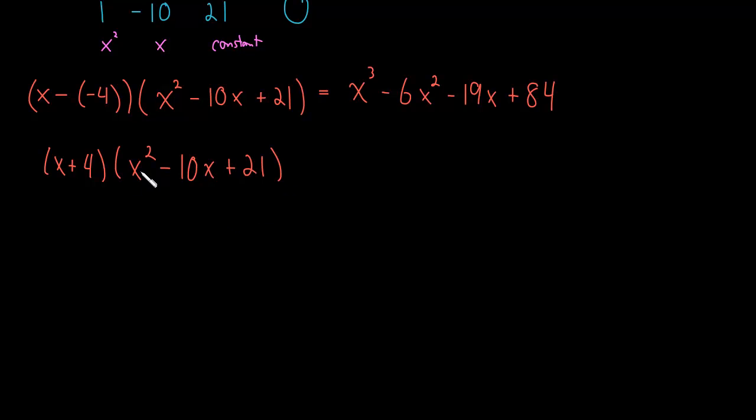And now let's factor this guy. So hopefully factoring a quadratic polynomial is a little bit easier for you. But what are we doing? We're looking for two numbers. They multiply to positive 21 and they add up to negative 10.